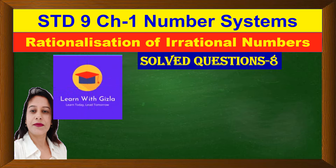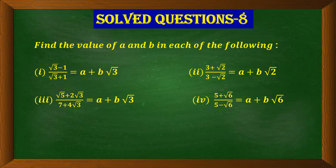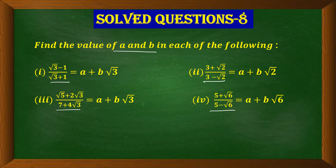Hello dear students, welcome to YouTube channel Learn with Kiesla. In this video on rationalization, we are going to take a few questions where we have to find the value of a and b. These questions involve an irrational number in the denominator which we have to convert into a rational number through rationalization, and from that we will find the values of a and b. Let us start with the first part.